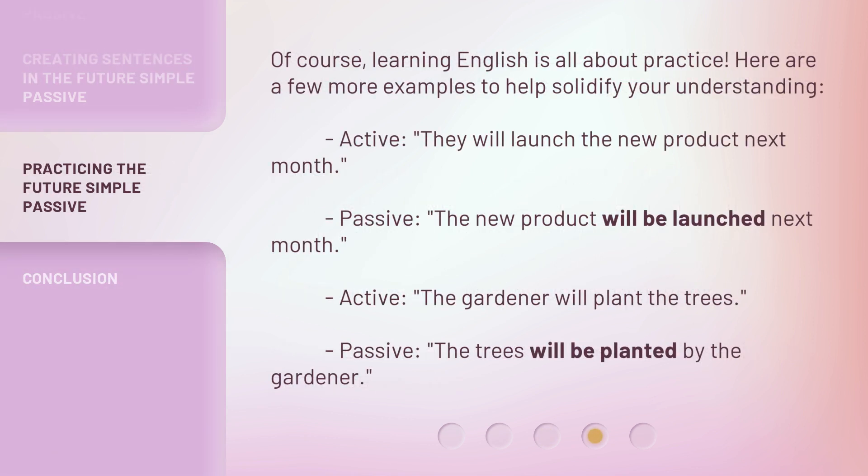Of course, learning English is all about practice. Here are a few more examples to help solidify your understanding. Active: they will launch the new product next month. Passive: the new product will be launched next month. Active: the gardener will plant the trees. Passive: the trees will be planted by the gardener.